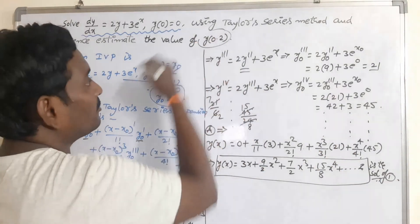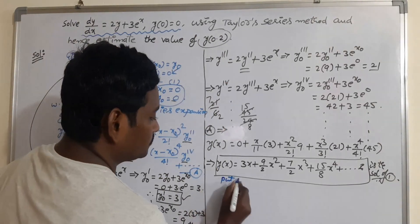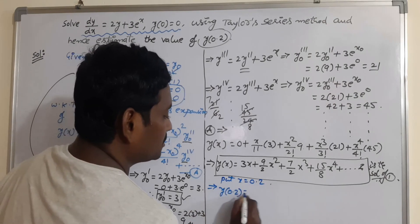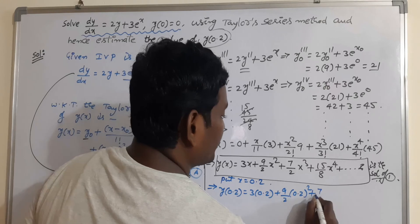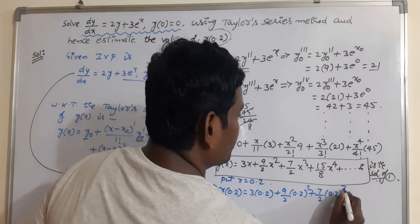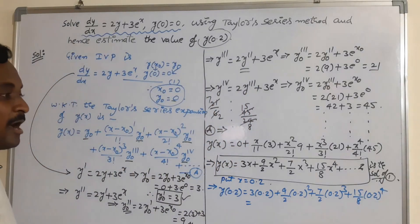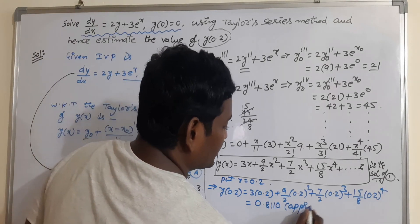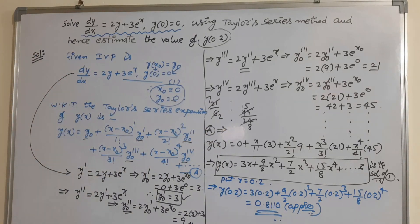Now we have to find y(0.2). For y(0.2), replace x = 0.2. You will get y(0.2) = 3(0.2) + (9/2)(0.2)² + (7/2)(0.2)³ + (15/8)(0.2)⁴ + ... By operating in a scientific calculator, you will get the answer as approximately 0.810. This is the way to solve the given initial value problem using Taylor series method.